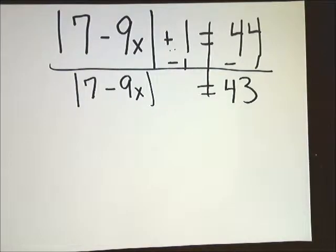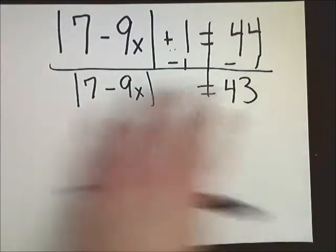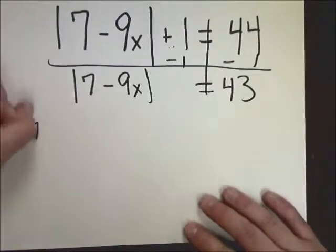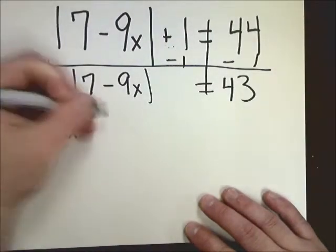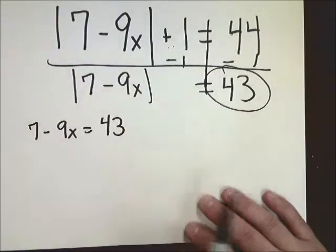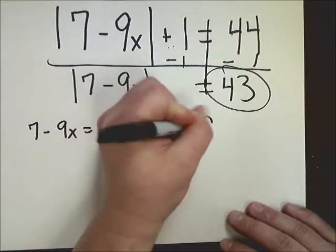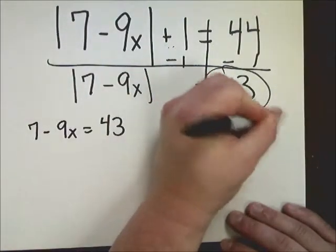So I'm left with the absolute value of 7 minus 9x equals 43. So from here, what I'm going to do is just break it off into two problems like I did before. The hard part, really, or the strange part, was just to get rid of this plus 1. So I'm going to do this. Now, I'm going to split the 43, not the 44. Because remember, we had to get the absolute value by itself before we split it.